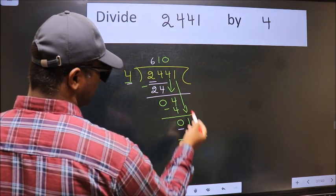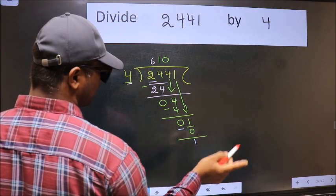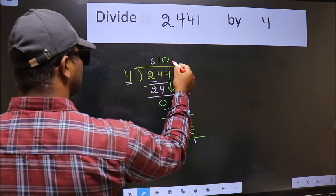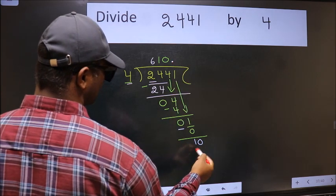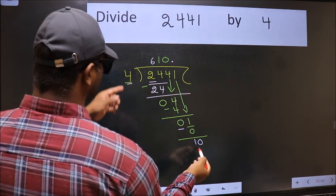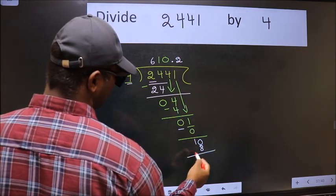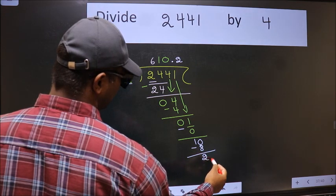Over here, we did not bring any number down, and 1 is smaller than 4. So now we can put the dot and take 0, making it 10. A number close to 10 in the 4 table is 4 times 2, which is 8. Now we should subtract. We get 2.